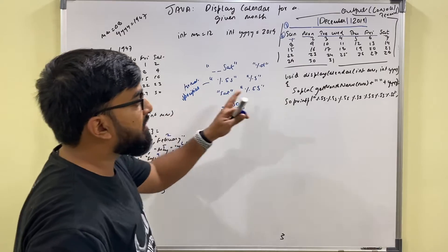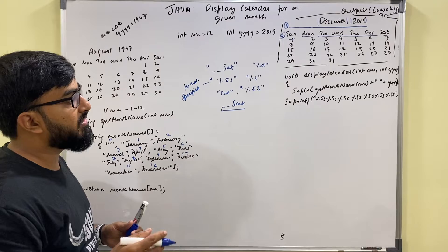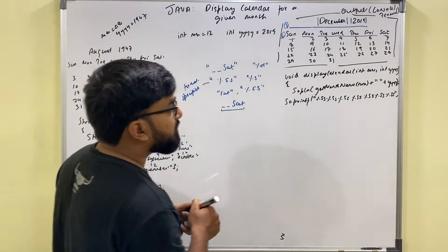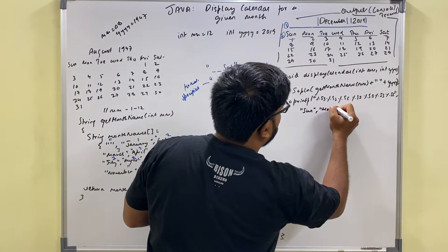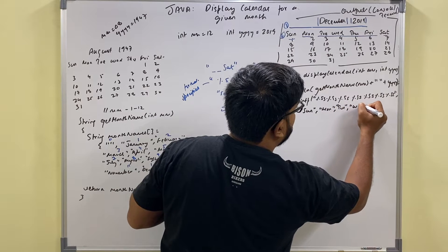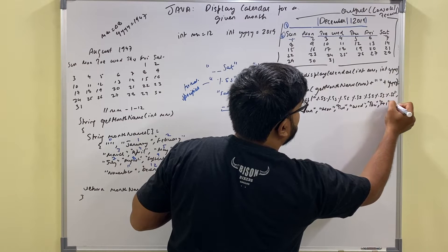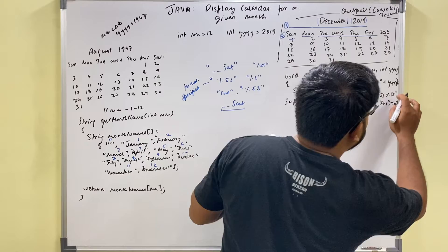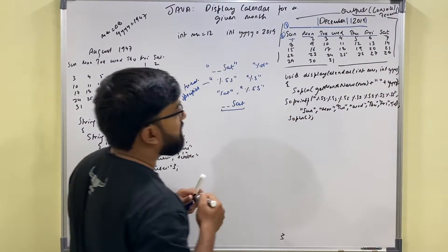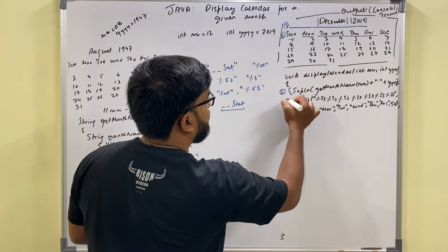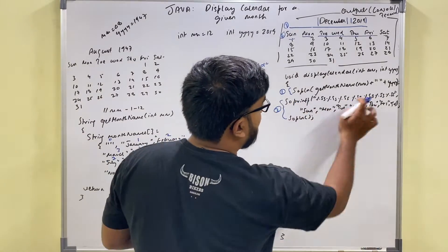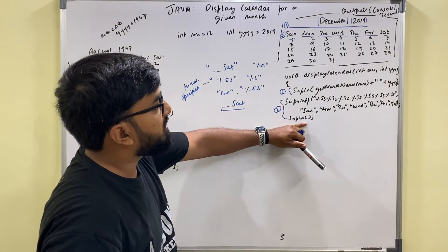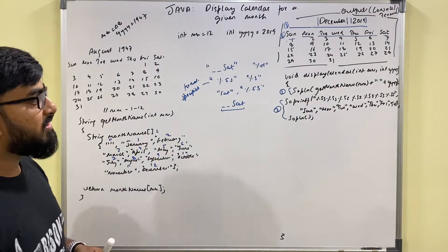This is detail about printf — I have already made a video about it and will add the link in the description. Five characters for each of seven days. Arguments are Sunday, Monday, Tuesday, Wednesday, Thursday, Friday, and Saturday. I also add a newline after printing all day names. Now I need to start printing the dates from 1 to the maximum number of days in this month for the given year.